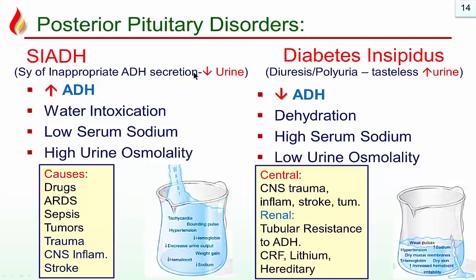There are two major posterior pituitary disorders: SIADH, where there is excess ADH, and diabetes insipidus, where there is decreased ADH. With excess anti-diuretic hormone, there is water retention, water intoxication — the body stores water — resulting in low serum sodium and high urine osmolality, so urine becomes too concentrated. Both conditions occur with CNS injury, trauma, tumor, sepsis, acute respiratory distress syndrome, and many drugs. A helpful mnemonic: SIADH is like markedly increased ADH with decreased urine output.